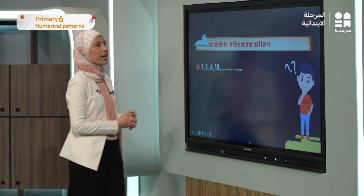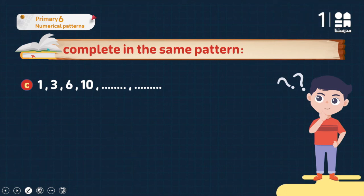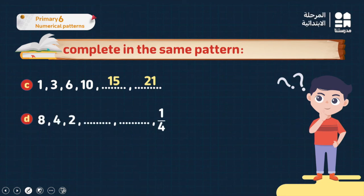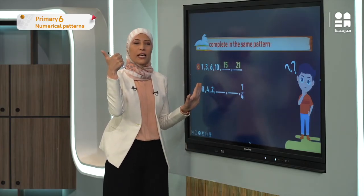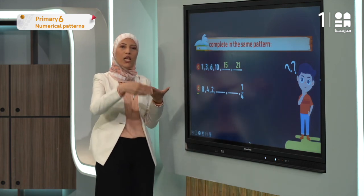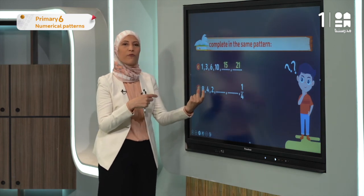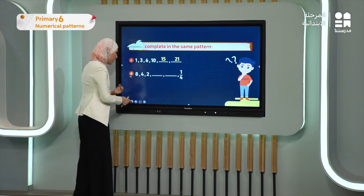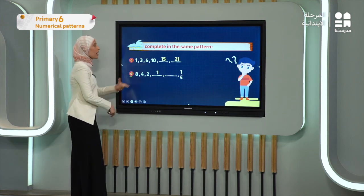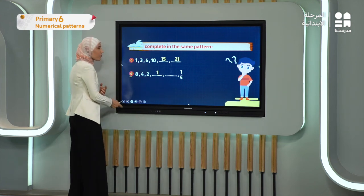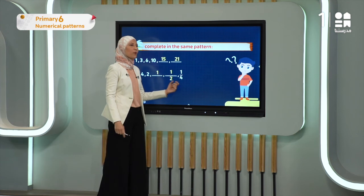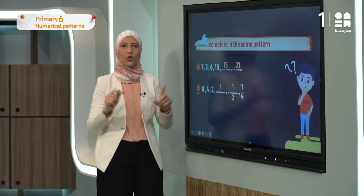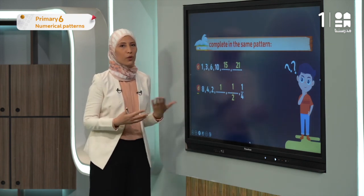Letter C: 1, 3, 6, 10 — these are triangular numbers. The next will be 15, then 21. Letter D: 8, 4, 2 — dividing by 2 each time. Like the first exercise: 8 divided by 2 is 4, 4 divided by 2 is 2, 2 divided by 2 is 1, 1 divided by 2 is one half, and one half divided by 2 is one quarter. If you use your calculator, you'll find it easy.